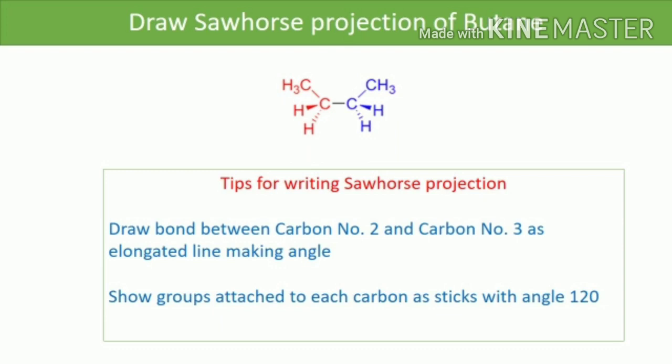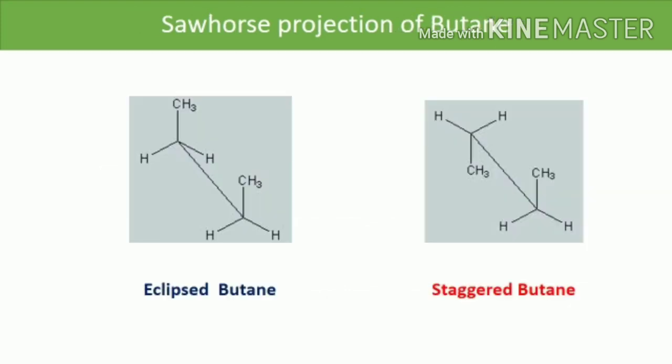Let us check another example: how to draw the Sahar's projection of butane. For writing the Sahar's projection, first write the structure of butane. Show the bond between carbon number 2 and carbon number 3 as an elongated line, and show the groups attached to each carbon as sticks making an angle of 120 degrees. There are many conformations of butane, out of which the Sahar's projection of fully eclipsed and fully staggered butane are shown here.